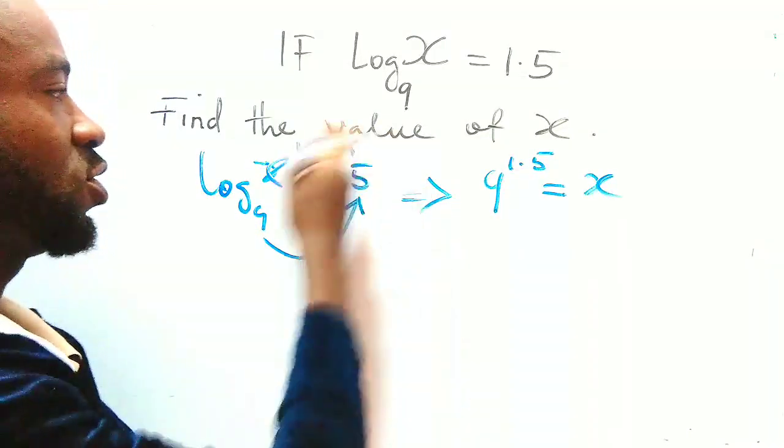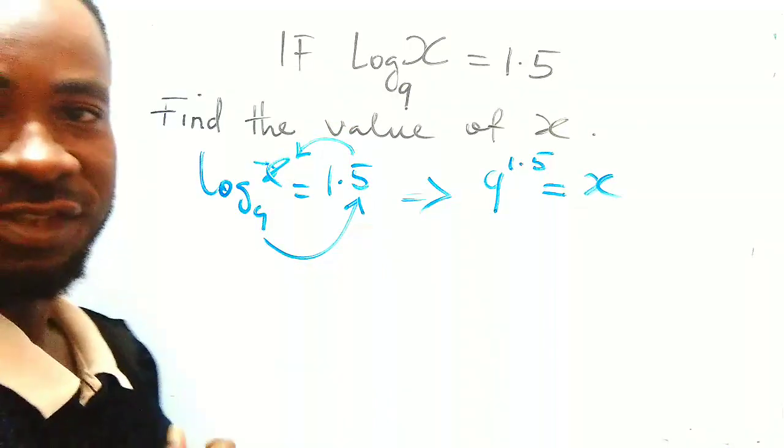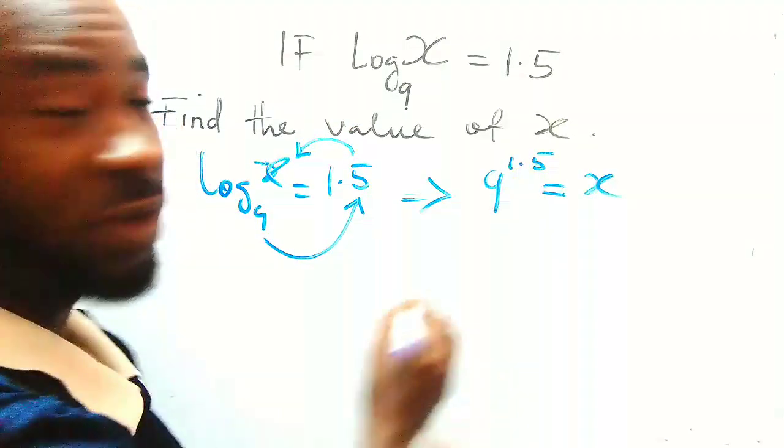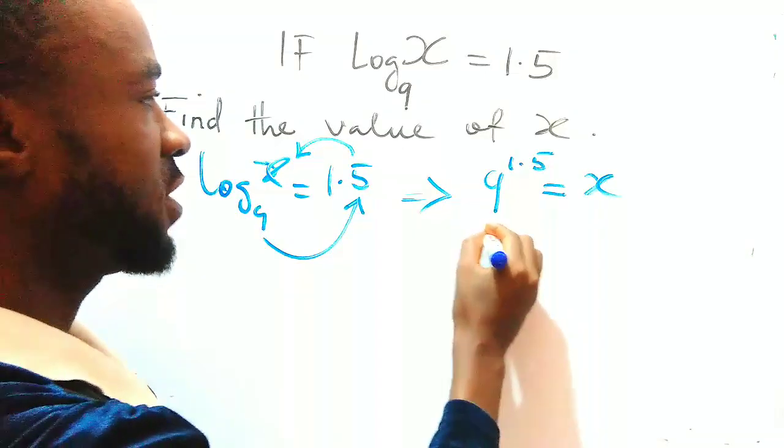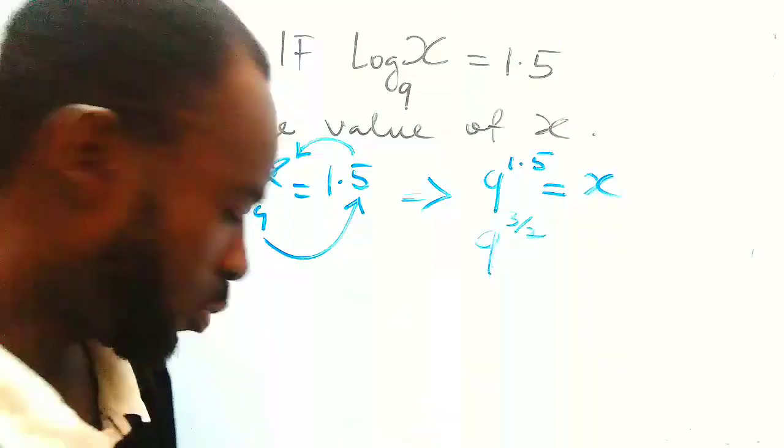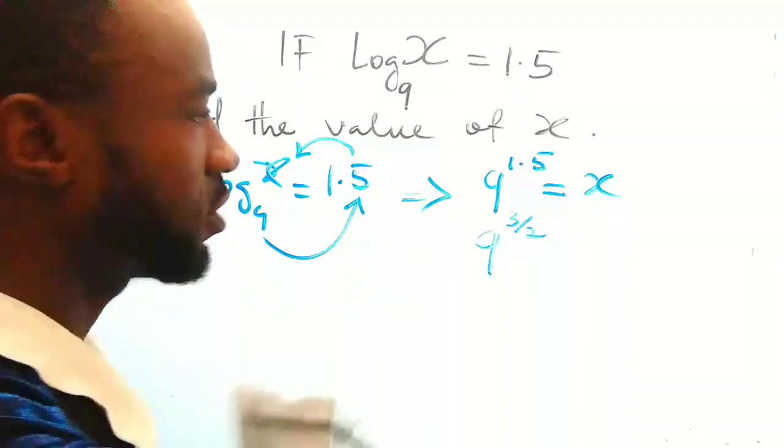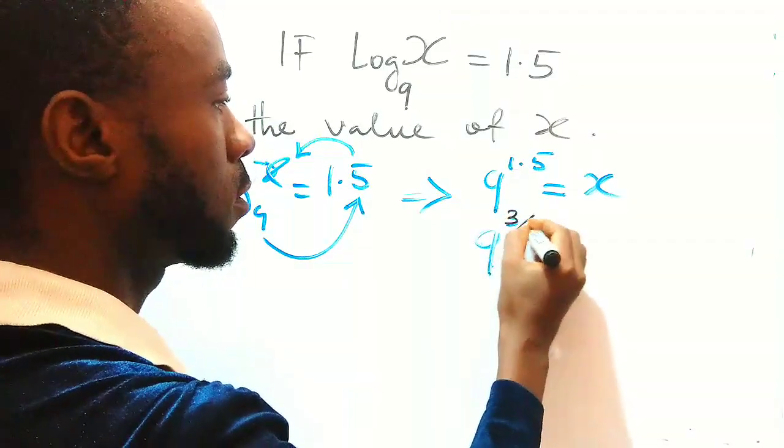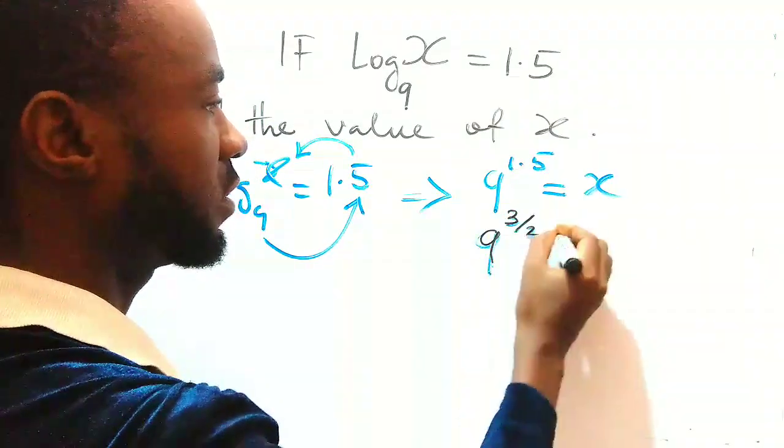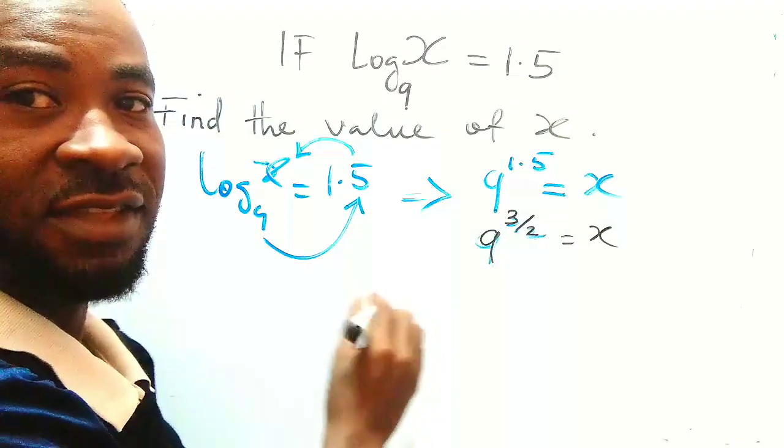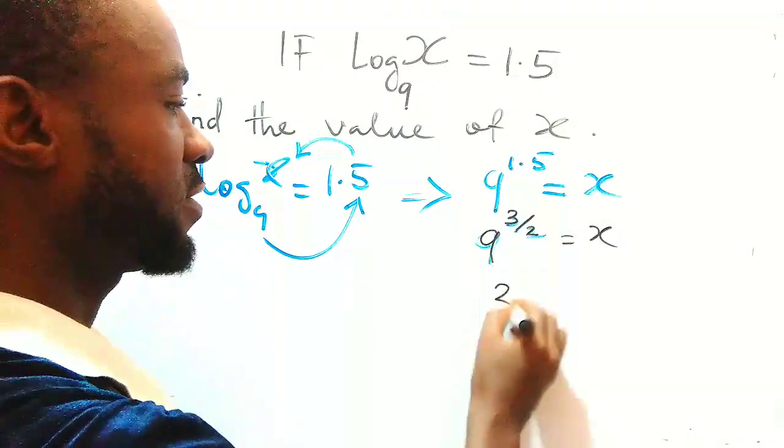When you have done that, we know that 1.5 is the same thing as 3 over 2. So I can write it this way. And then I also know that my 9 is the same thing as 3 squared.